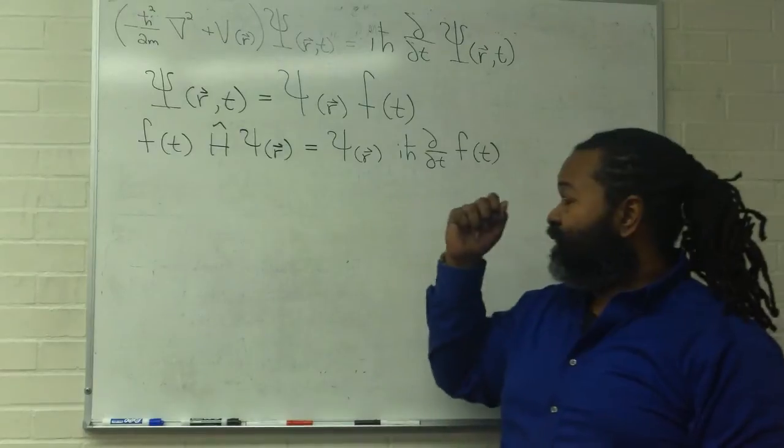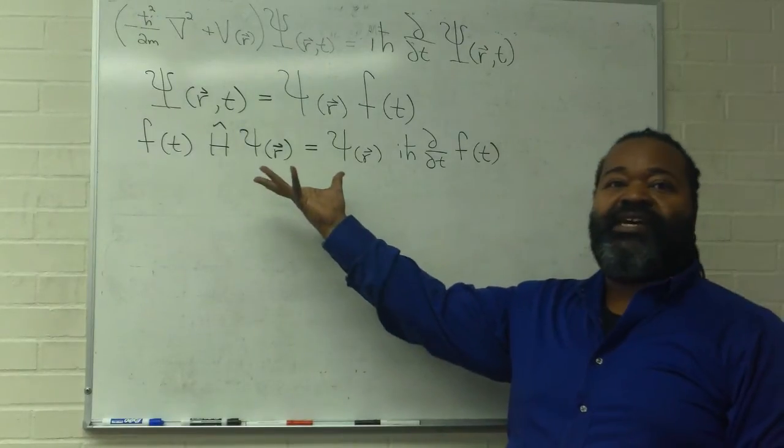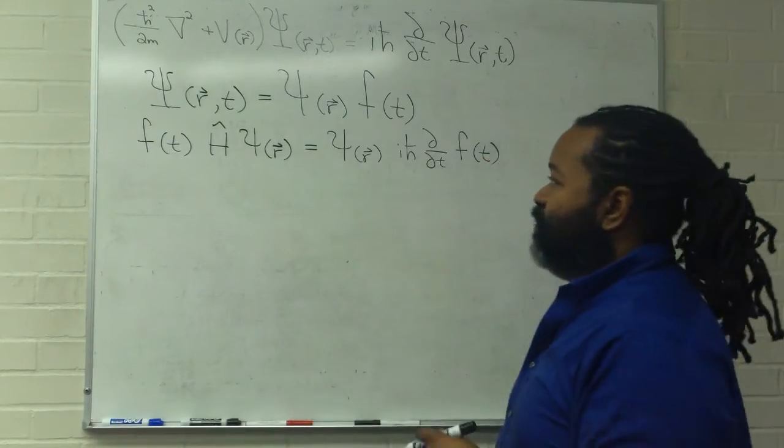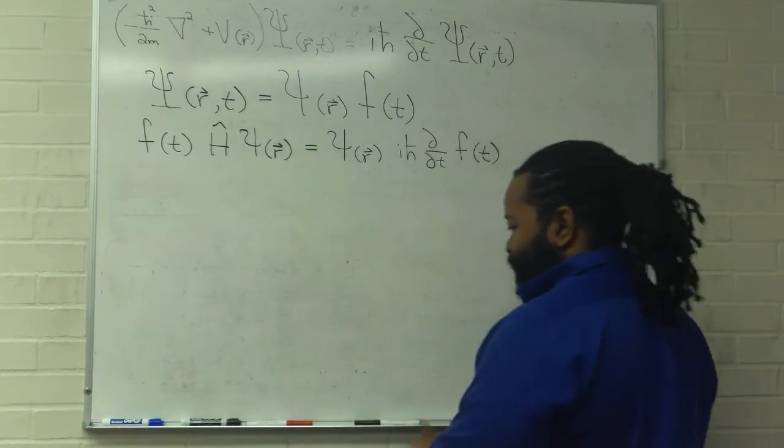Because we have separability, both sides have to be equal to some constant. We'll call it E. It's convenient and we need to multiply both sides by that.